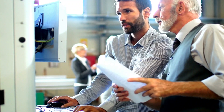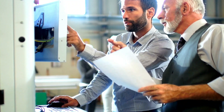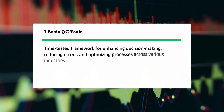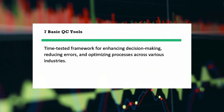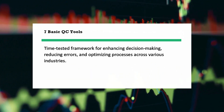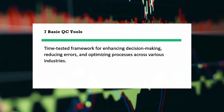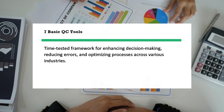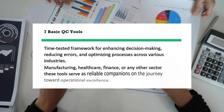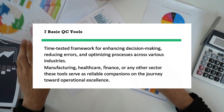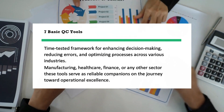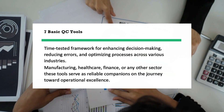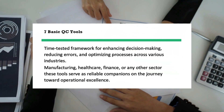In the ever-evolving landscape of global competition, adaptability and efficiency are paramount. The seven basic QC tools provide a time-tested framework for enhancing decision-making, reducing errors, and optimizing processes across various industries. Whether you're in manufacturing, healthcare, finance, or any other sector, these tools serve as reliable companions on the journey toward operational excellence.